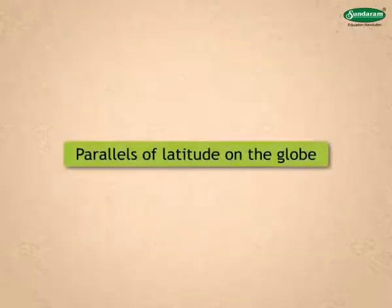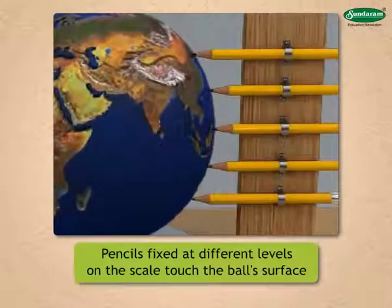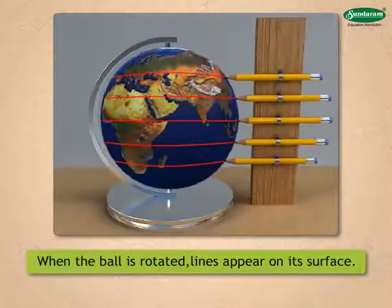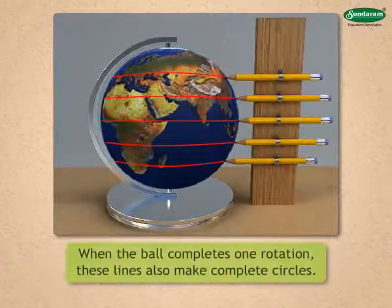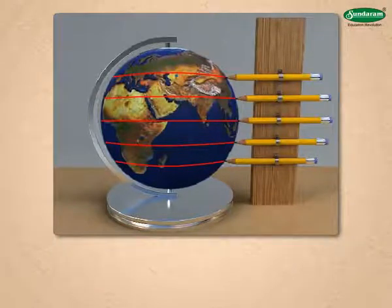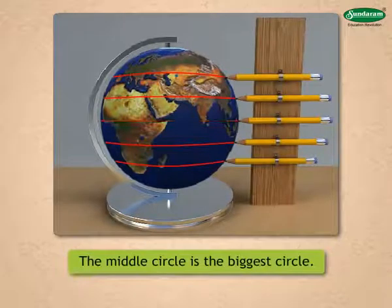Let us study about parallels of latitude on the globe. Observe the figure. A ball is placed near a scale. Pencils fixed at different levels on the scale touch the ball's surface in such a way that when the ball is rotated, lines appear on its surface. When the ball completes one rotation, these lines also make complete circles. In this way, many circles can be drawn on its surface.